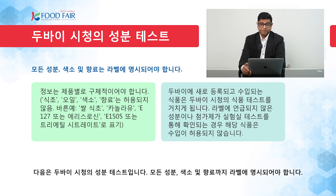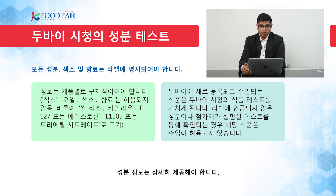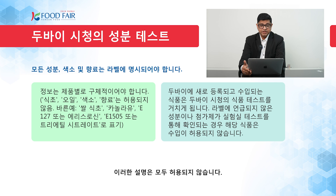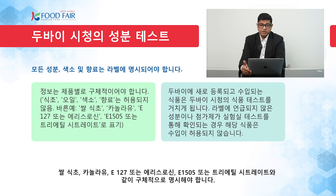Regarding ingredients and laboratory testing: all ingredients, colorings, and flavorings should be mentioned on the label. The information should be product-specific. For example, stating 'vinegar,' 'oil,' 'coloring,' or 'flavoring' are unacceptable descriptions. You need to mention specific items like 'rice vinegar,' 'canola oil,' 'E127 erythrosine,' 'E1505,' or 'triethyl citrate' — these are accepted.